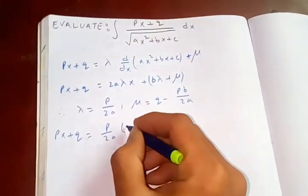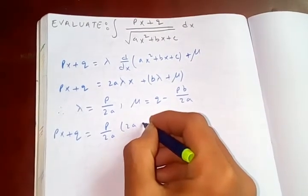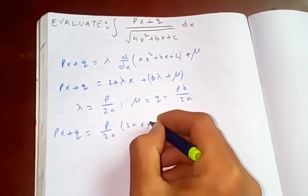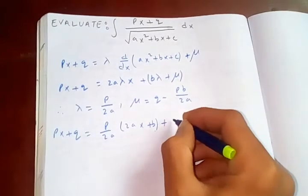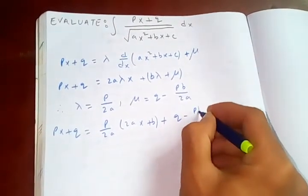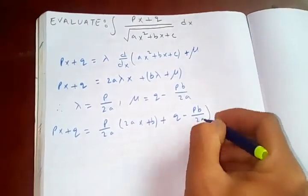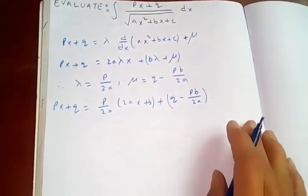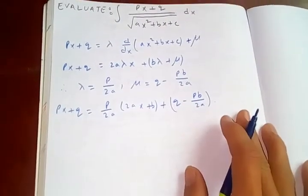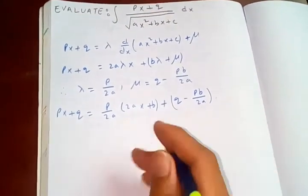p upon 2a, now differentiate this one: 2a times 2ax plus b, plus q minus pb upon 2a. Now we can plug in this integral right now.